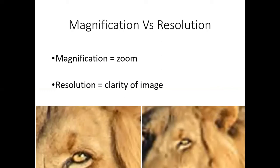A good image will have high magnification and high resolution if you want to see something small like a nucleus or a mitochondria. If you want to see small things like mitochondria, you have to have a high resolution microscope.